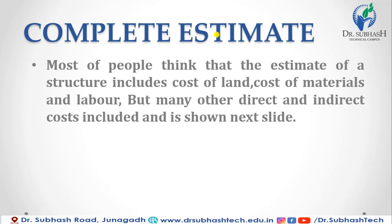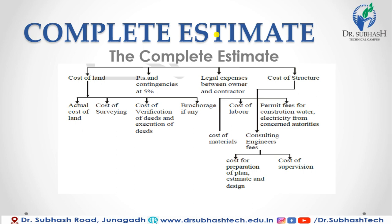We will discuss the different types of hidden costs included in estimation. In this slide, the complete estimate has four different types: first is cost of land, second is provisional sum and contingency at 5 percentage, third is legal expenses between owner and contractor, and fourth is cost of structure.